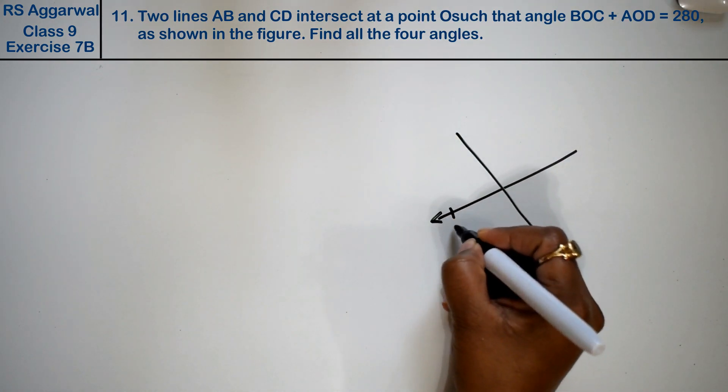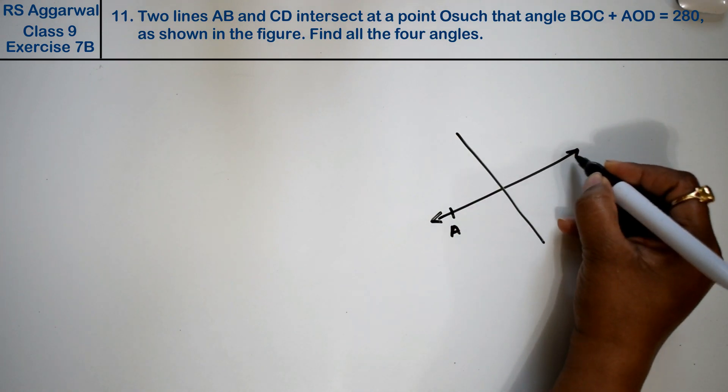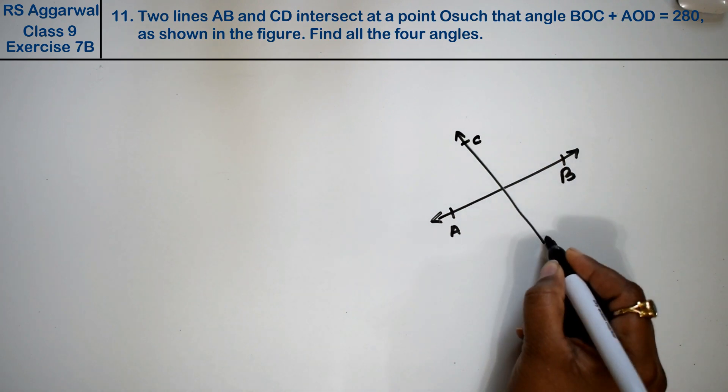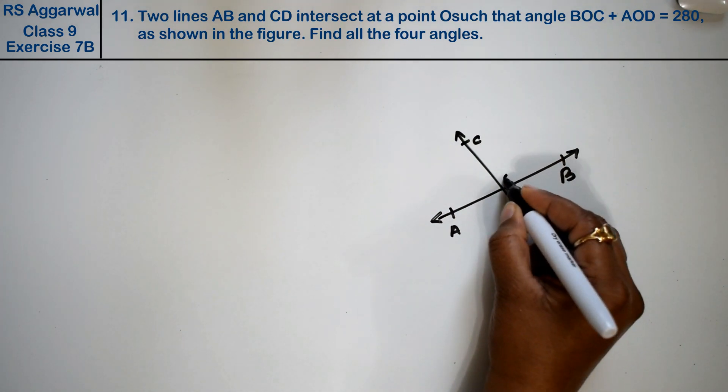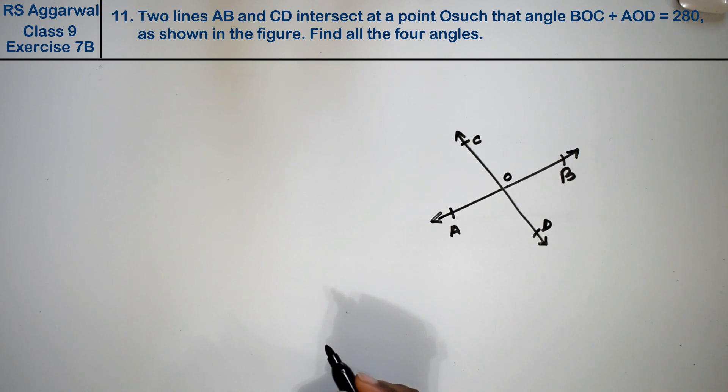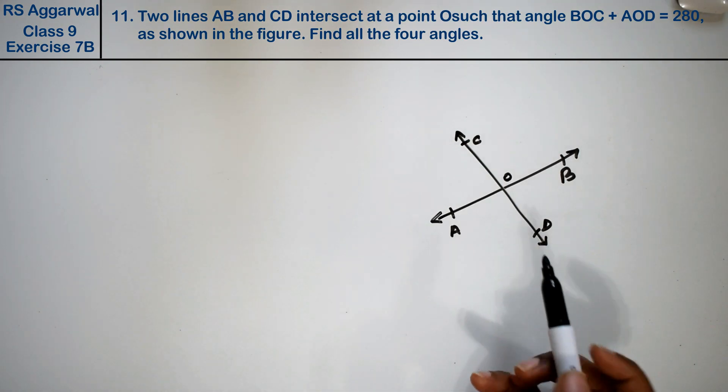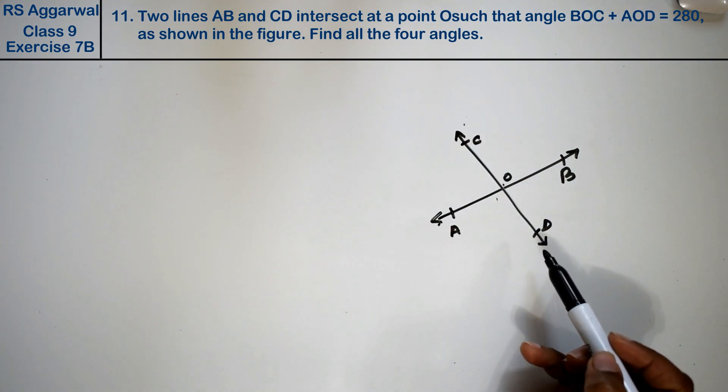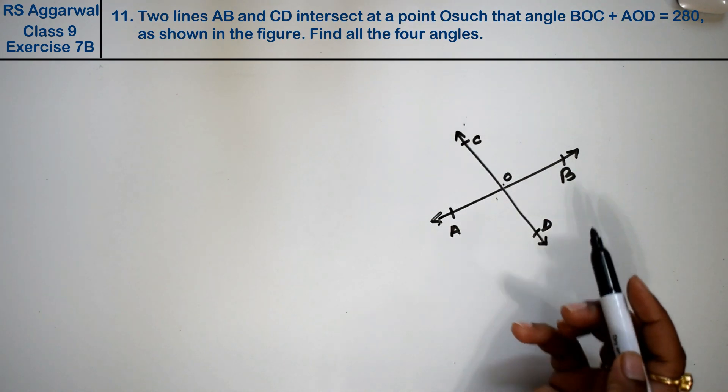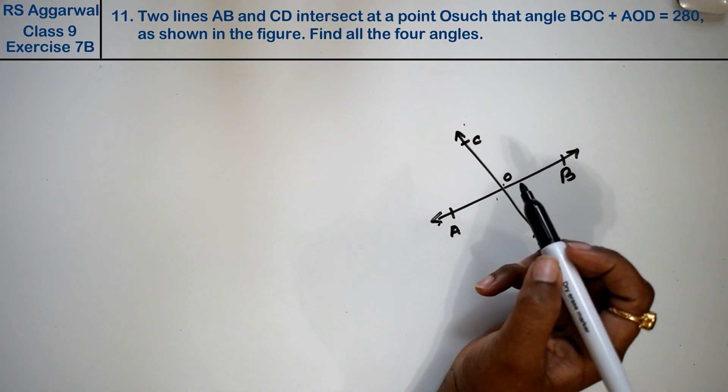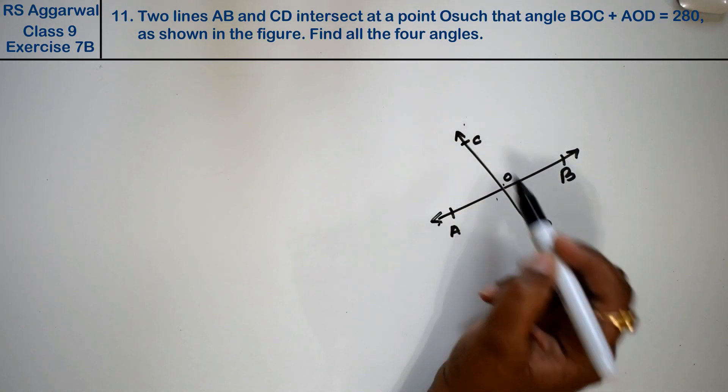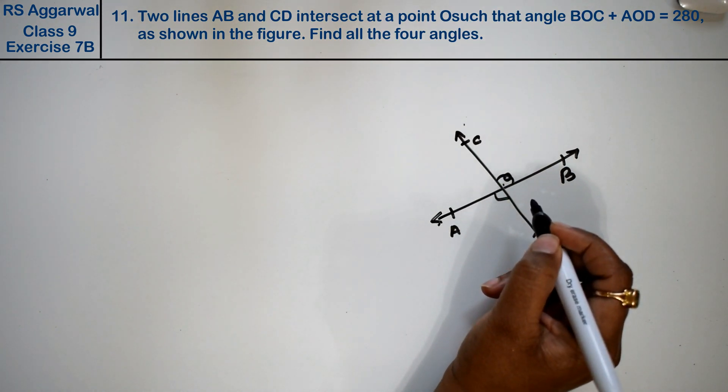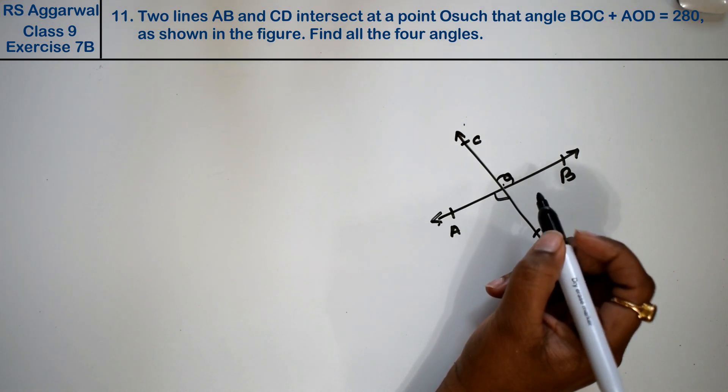This is A, B, C, and D. They intersected at O point, such that angle BOC plus angle AOD equals to 280 degrees. As shown in the figure, find all the four angles.